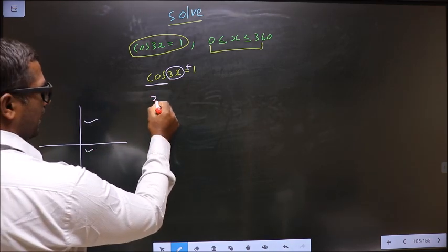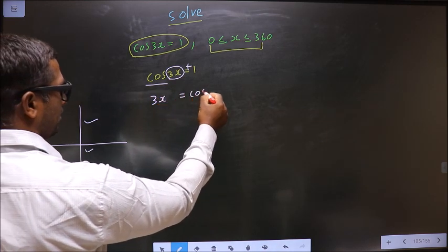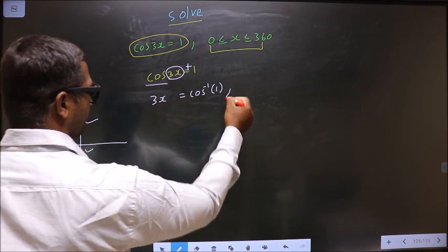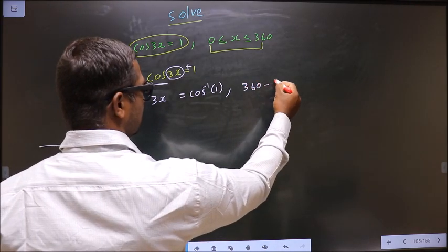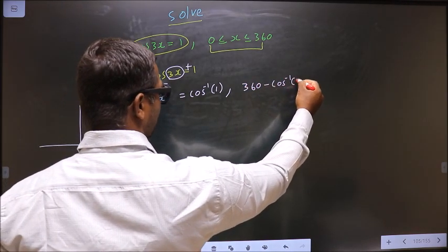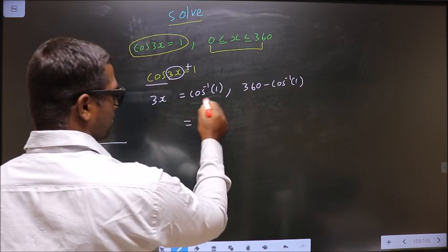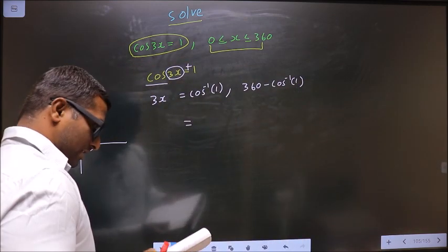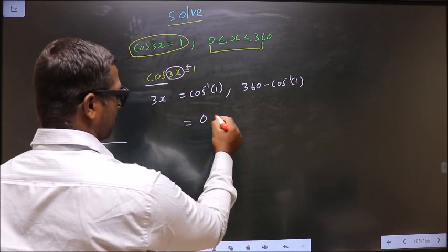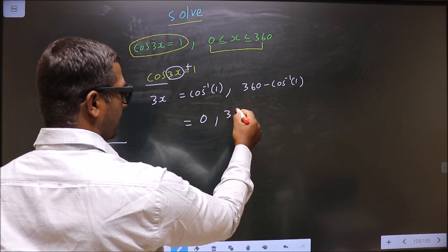Now to get an angle in the first we do directly cos inverse 1. To get an angle in the fourth we should do 360 minus cos inverse 1. So put this in the calculator you get 0. Put this in the calculator you get 360.